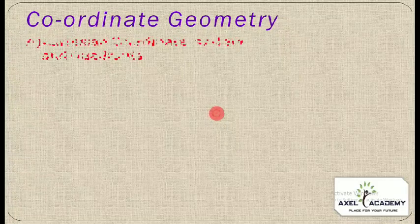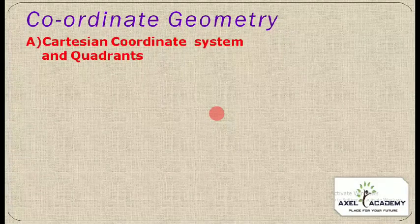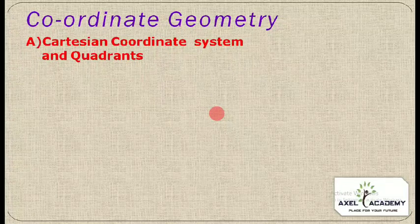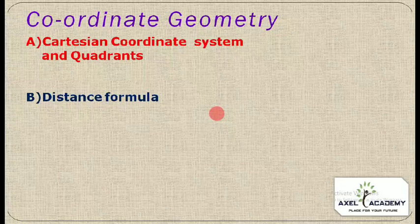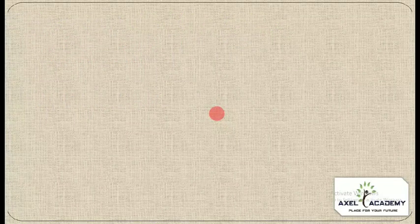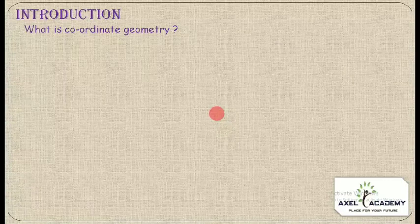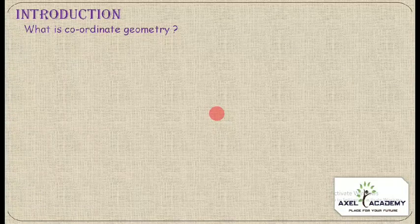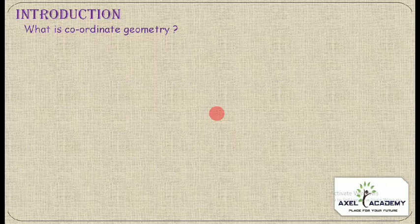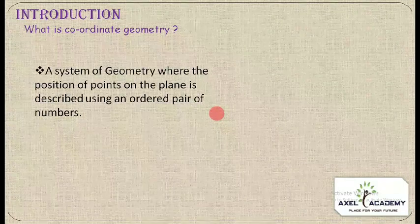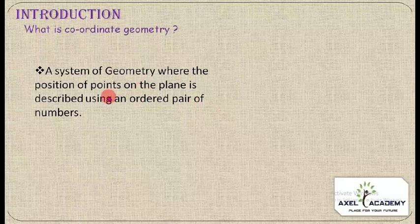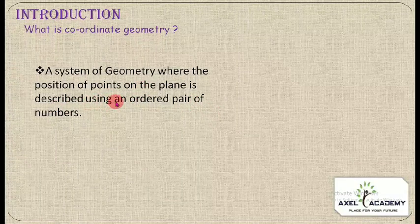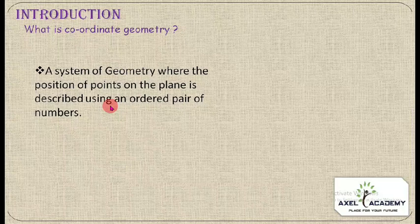In this topic we will cover the Cartesian coordinate system and coordinates, and then the distance formula. To begin, coordinate geometry is a system of geometry where the position of points on a plane is described using an ordered pair of numbers.